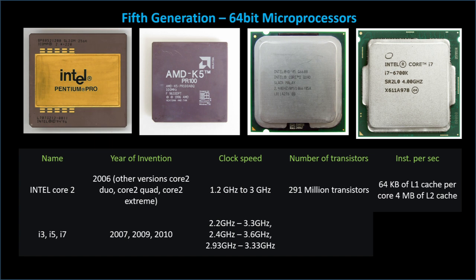One of the key developments of the fifth generation was the introduction of the Pentium processor in 1995 — one of the first 64-bit processors, with clock speeds ranging from 1.2 GHz to 3 GHz, 291 million transistors, and 64 KB instructions per second, making it significantly more powerful than previous generations. Following the Pentium were the i3, i5, and i7 microprocessors, released in 2007, 2009, and 2010 respectively, continuing to build on those advancements with faster clock speeds, more cores, and improved energy efficiency.